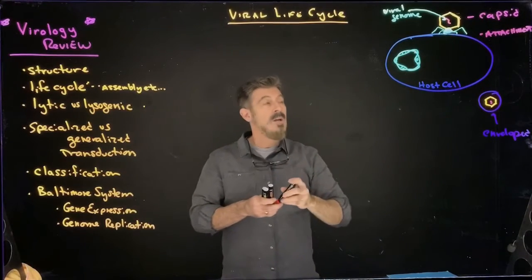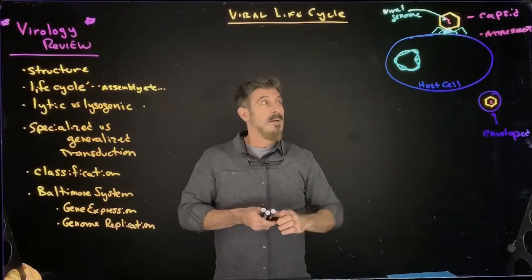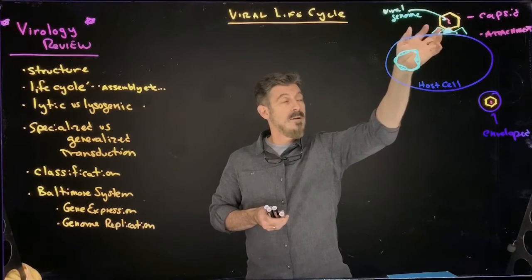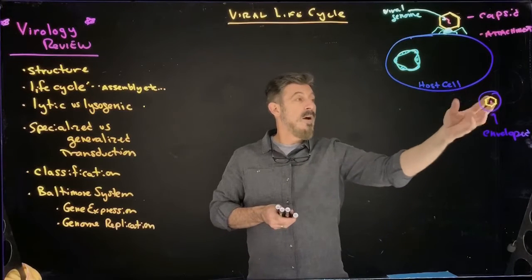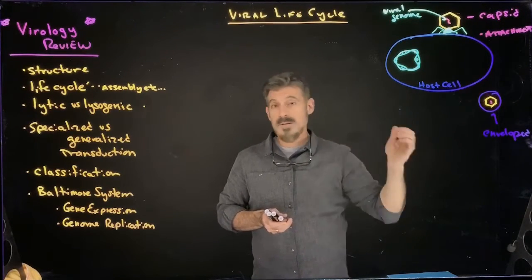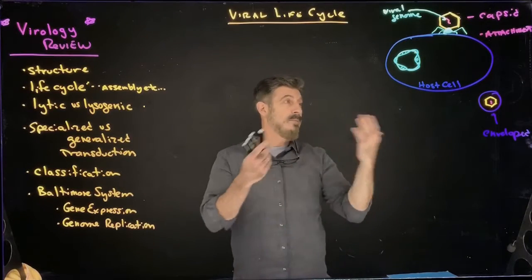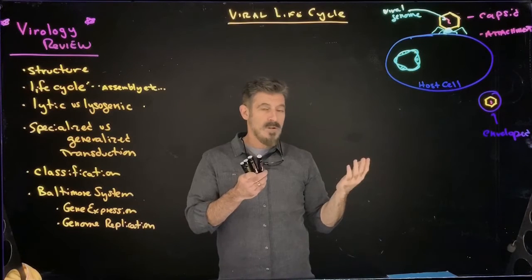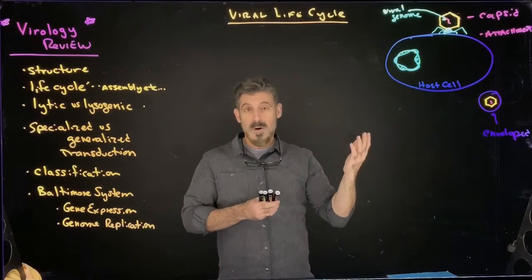Somehow it attaches to the host cell. This is the idea with the bacteriophage here. You have the tail pins and all attaching here to the cell. An enveloped one would attach in a different way. It would attach using the envelope itself to the cell membrane, fusing together, bringing the whole particle into the cell. So different ways that a virus can attach to the host cell, but that would be the first part of it.